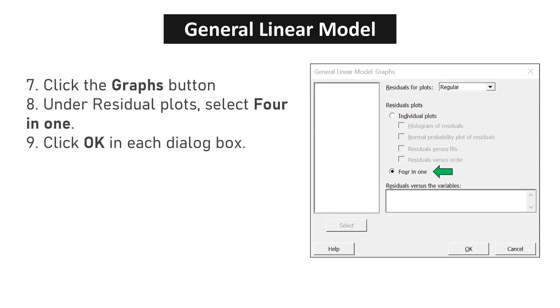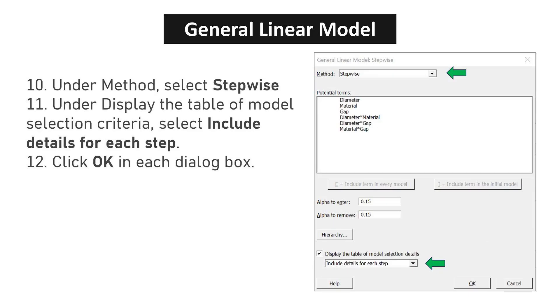Click the Graphs button. Under Residual Plots, select 4 in 1. Click OK in each dialog box. Under Method, select Stepwise. Under Display the Table of Model Selection Criteria, select Include Details for each step. Click OK in each dialog box.